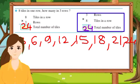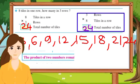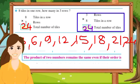The answer is also 24. This means the product of two numbers remains the same even if their order is changed.